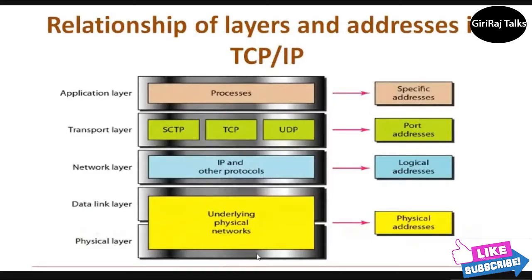There is one relationship of layers and addresses in TCP/IP. These relationships we will see on the diagram. Each address is related to a specific layer in the TCP/IP architecture as shown in the diagram. The physical layer and data link layer have physical addresses; the network layer has logical addresses; the transport layer has port addresses; and the application layer has specific addresses.